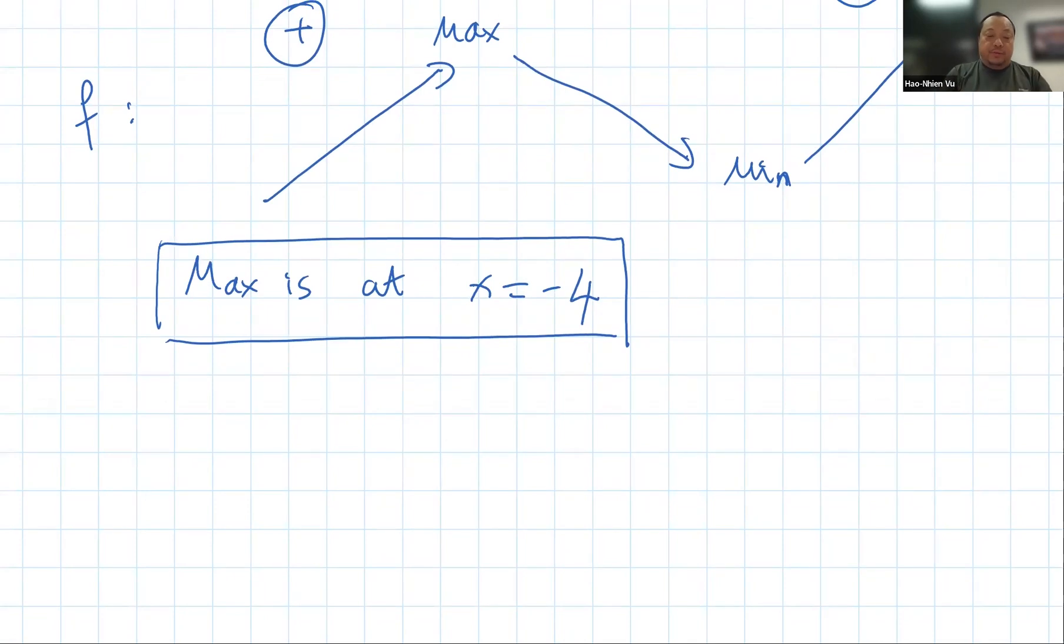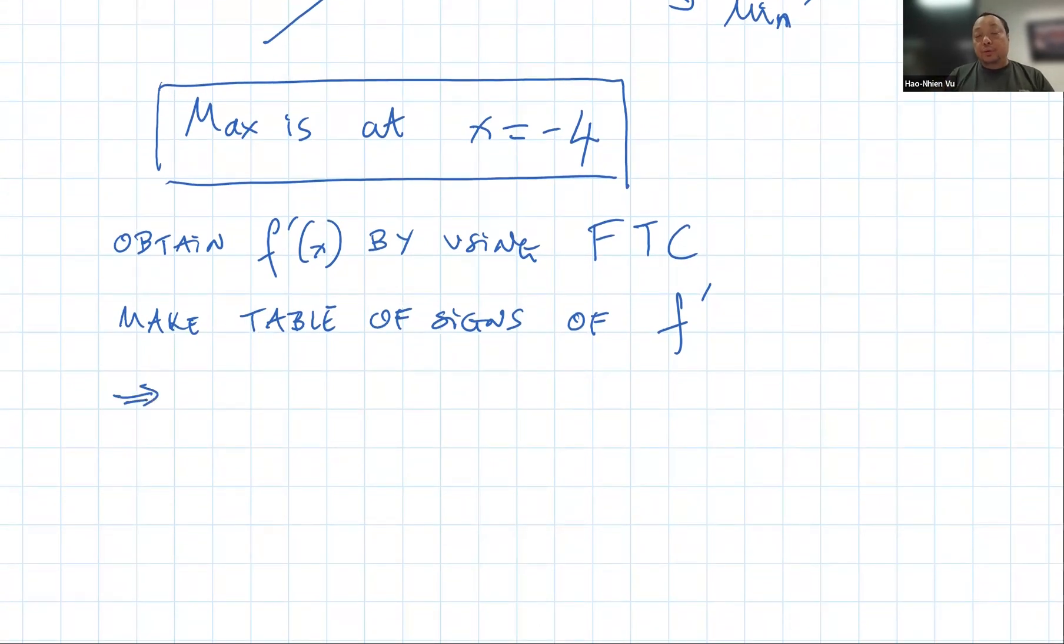Basically, there are three steps for finding max or min or other questions involving an integral function. You obtain f prime of x by using the fundamental theorem of calculus. Then you make a table of signs of the sign of f prime. And the signs of f prime will lead you to conclusion about f. Alright, that's that. Hope that helps.